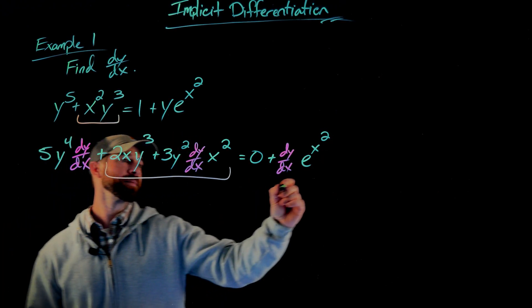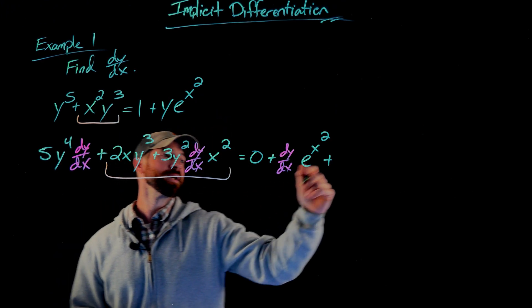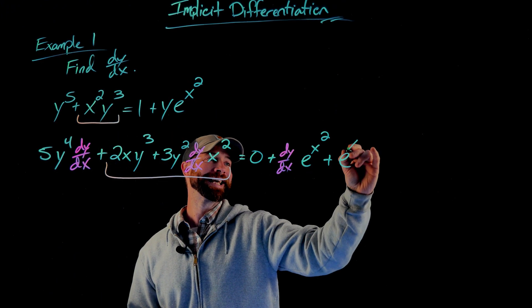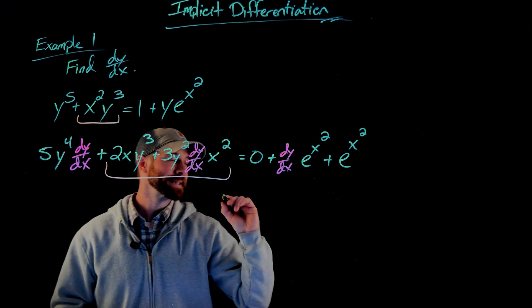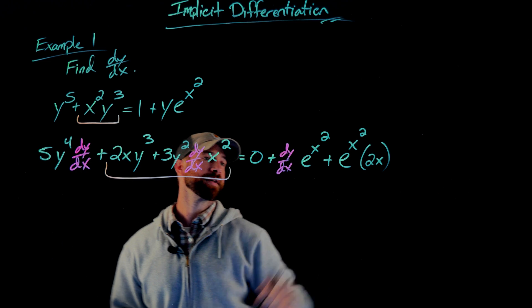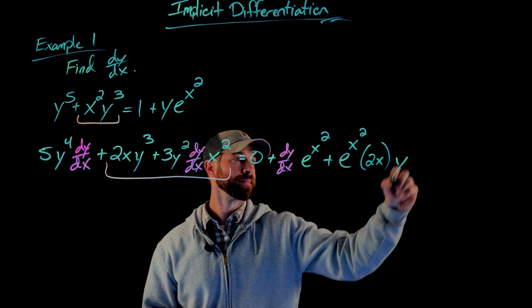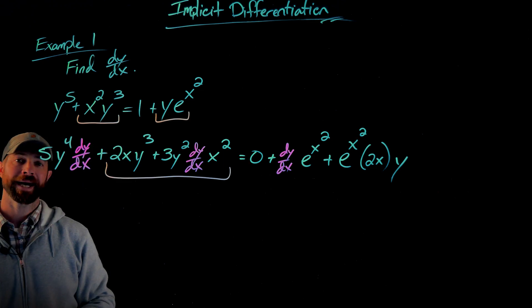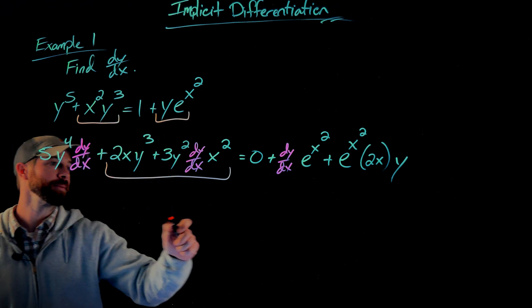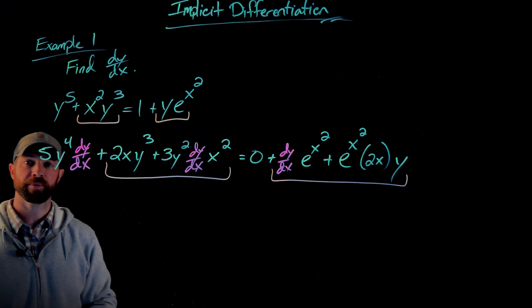And the second part of the product rule for this term is now to differentiate this. When I differentiate this, I get e to the x squared times 2x, which is the derivative of this inner function, then times y. Again, to emphasize that this one term right here results in these two terms because of the product rule.